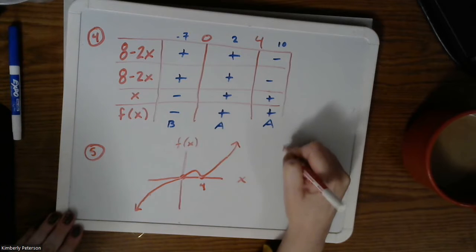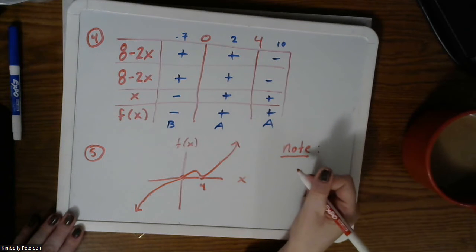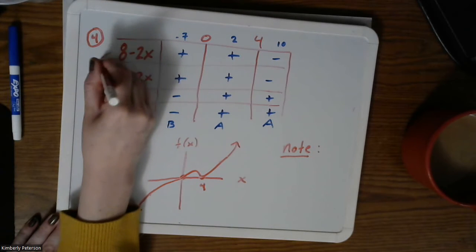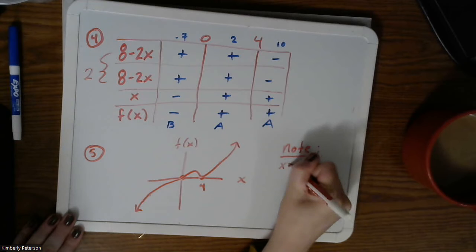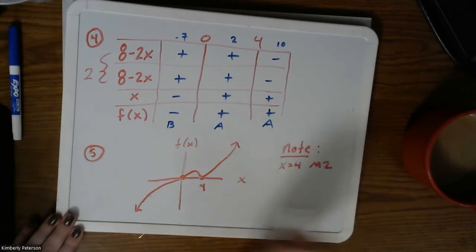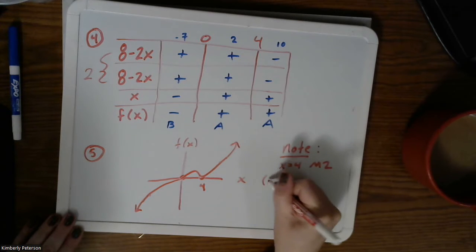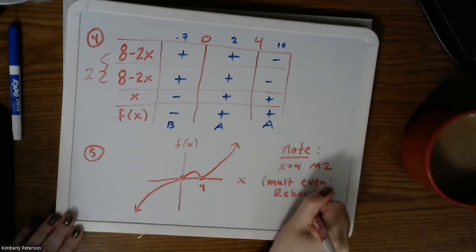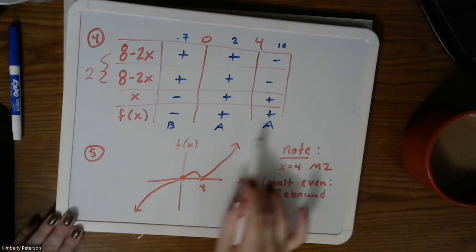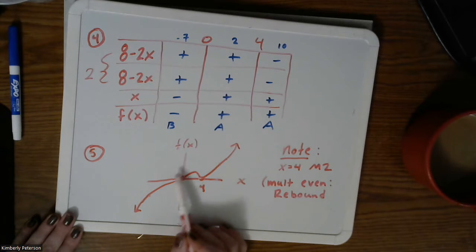There's a reason why this happens — we briefly discussed it on Wednesday. We had a multiplicity of two when x equaled four. Notice the graph does what we call a rebound: it went above and then stayed above. So if your multiplicity is even, you rebound — it stays either above or below, touching the value and bouncing back.